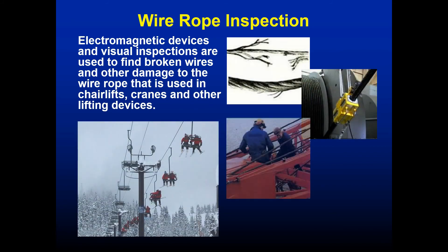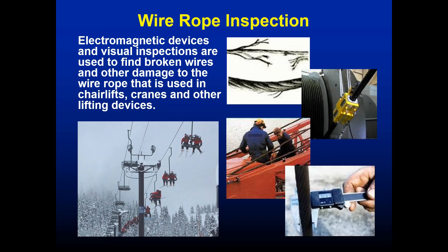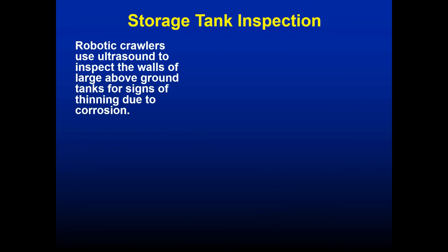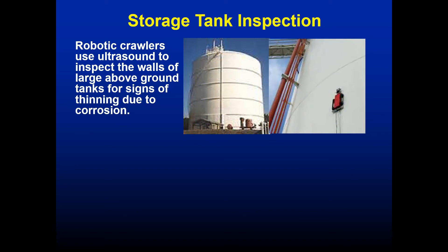Wire rope is used in many industries — from ski lifts to offshore oil and gas, shipping, and suspension bridges. Wire rope is predominantly inspected using electromagnetic devices and visual inspection, looking for frays, tears, and damage. There is a defined loss-of-material rating threshold before a wire rope must be replaced.